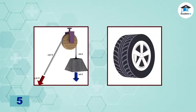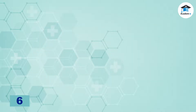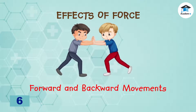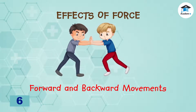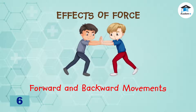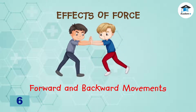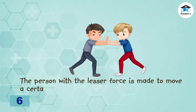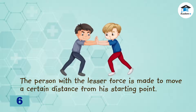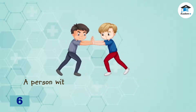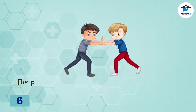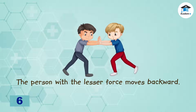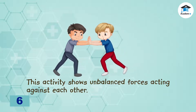Objects can be made to move faster through the use of equipment like pulleys and wheels. In this illustration, the forces that the boys exert in pushing each other are not equal, resulting in either one of them being pushed back. Therefore, movement takes place. When one of the forces acting on each other is greater than the other, the movement goes to the direction of the greater force. The person with the lesser force is made to move a certain distance from his starting point, while the person with the greater force moves forward. Oppositely, the person with the lesser force moves backward. This activity shows unbalanced forces acting against each other.